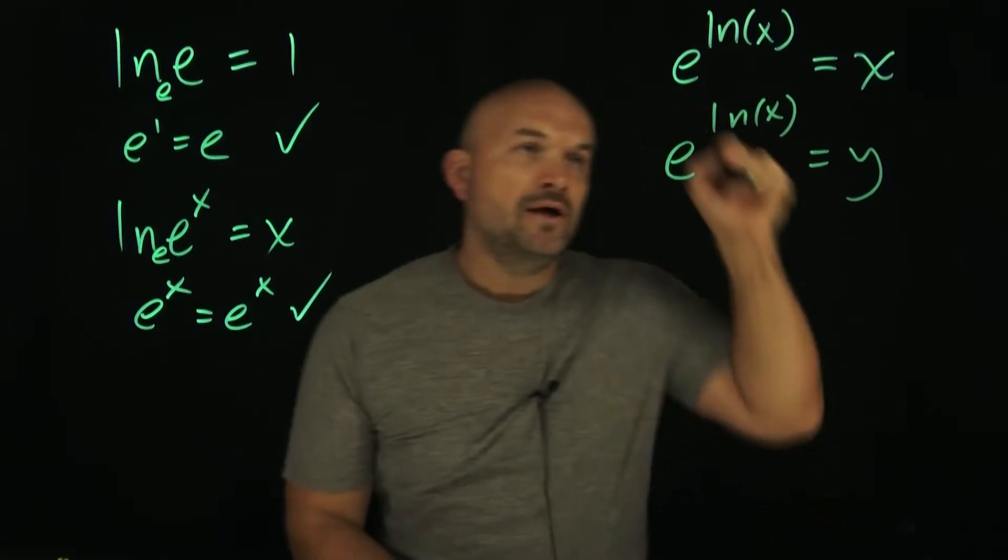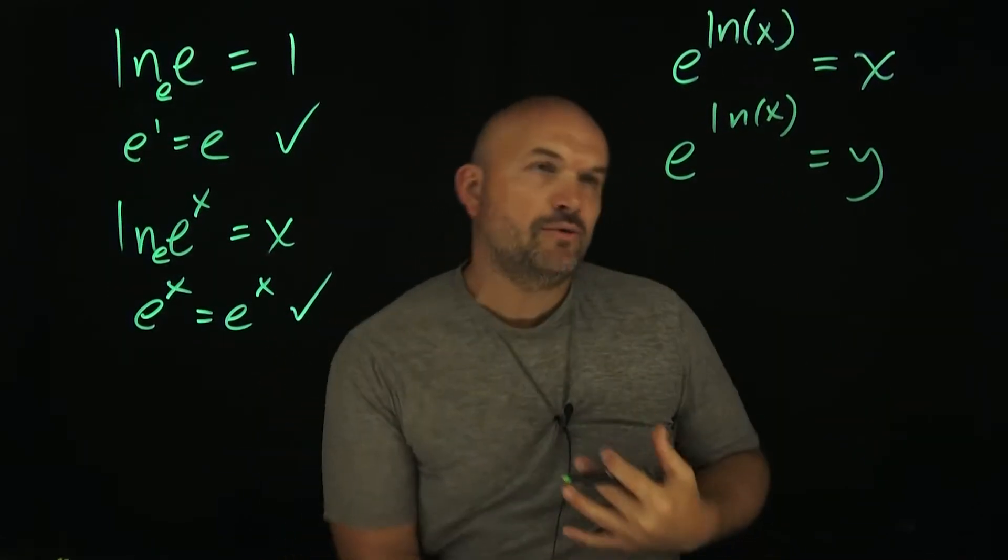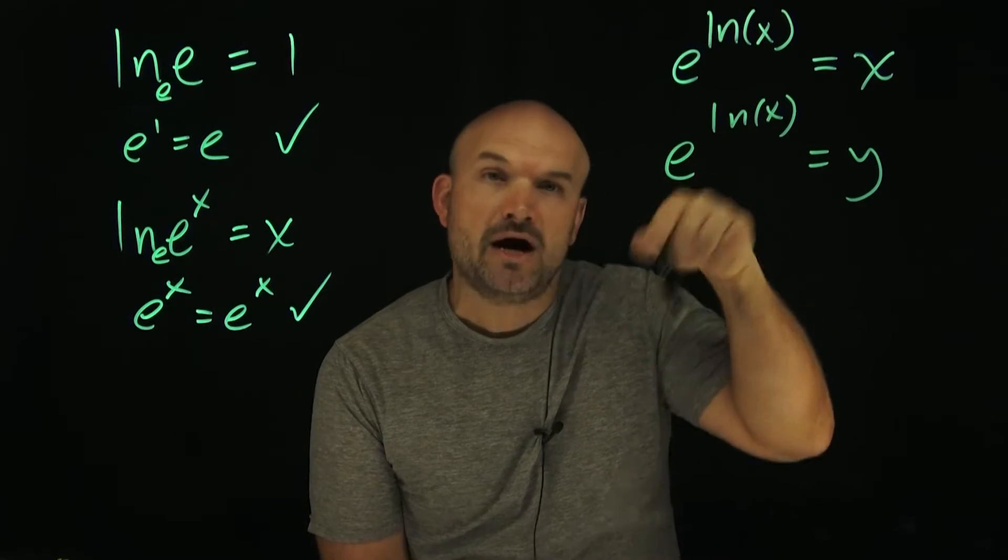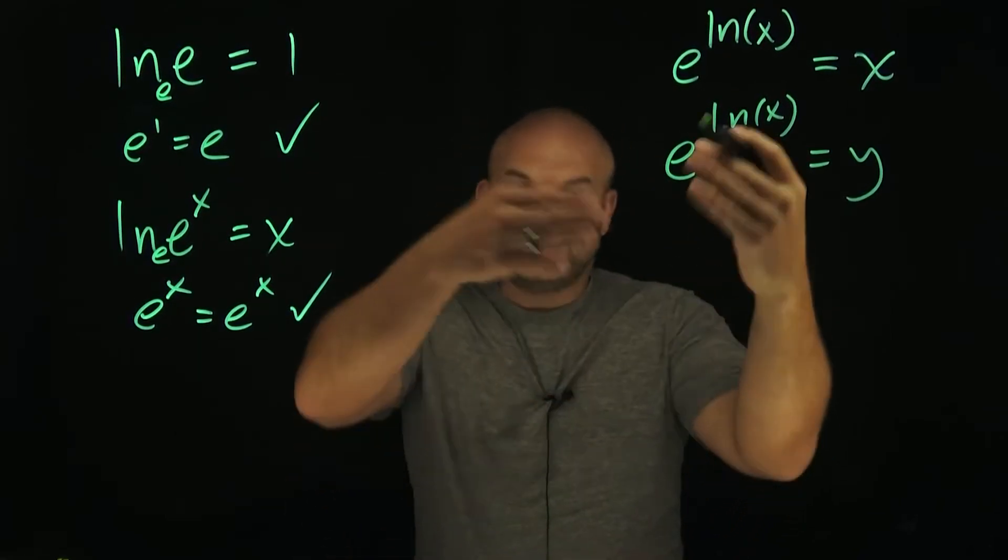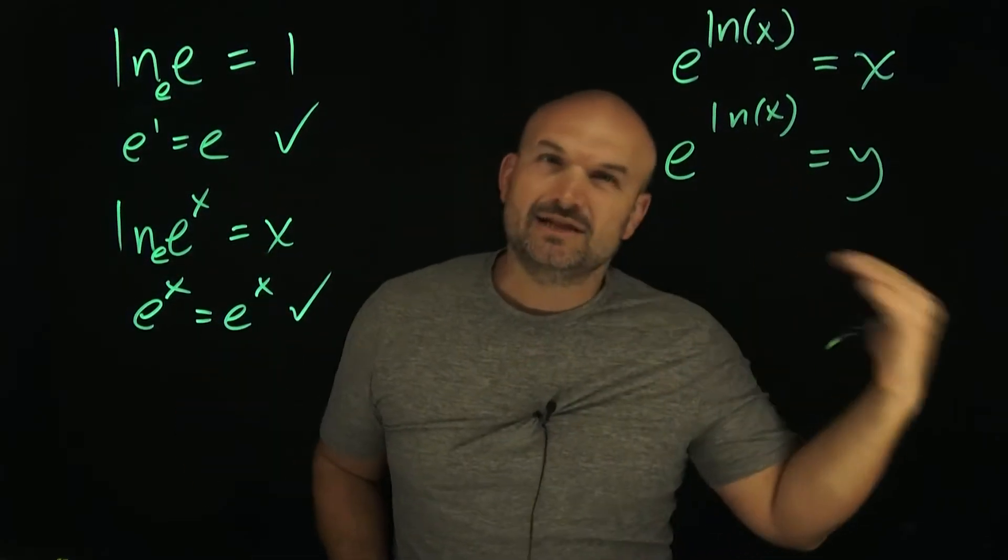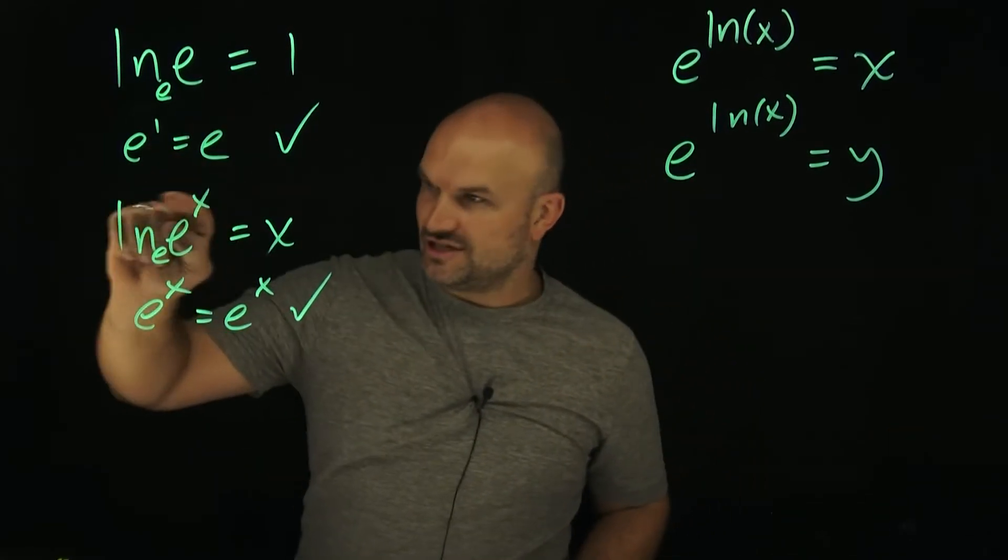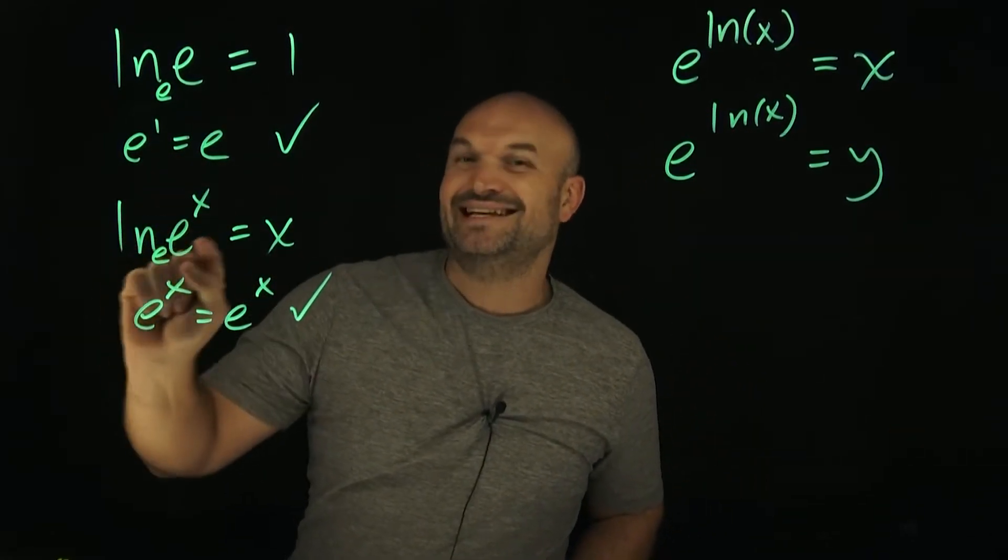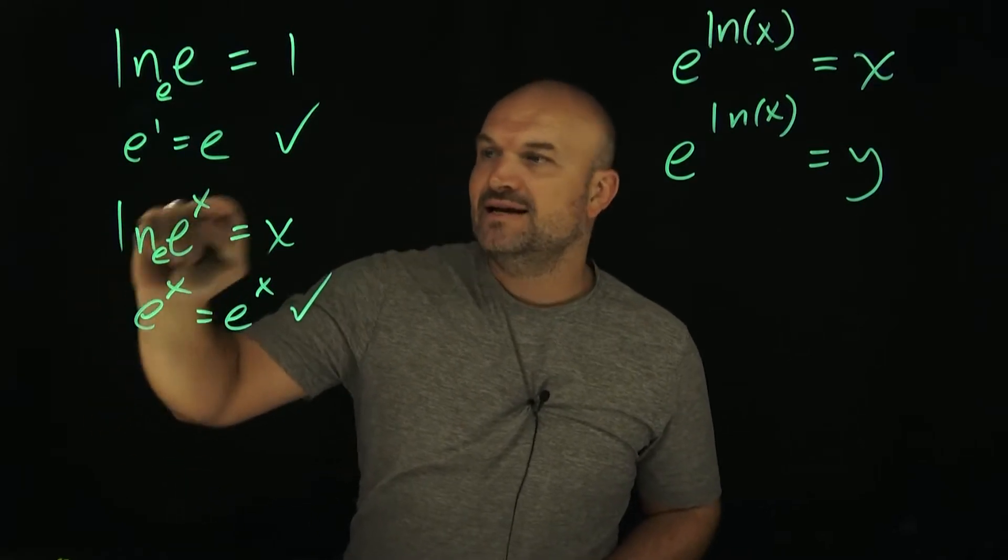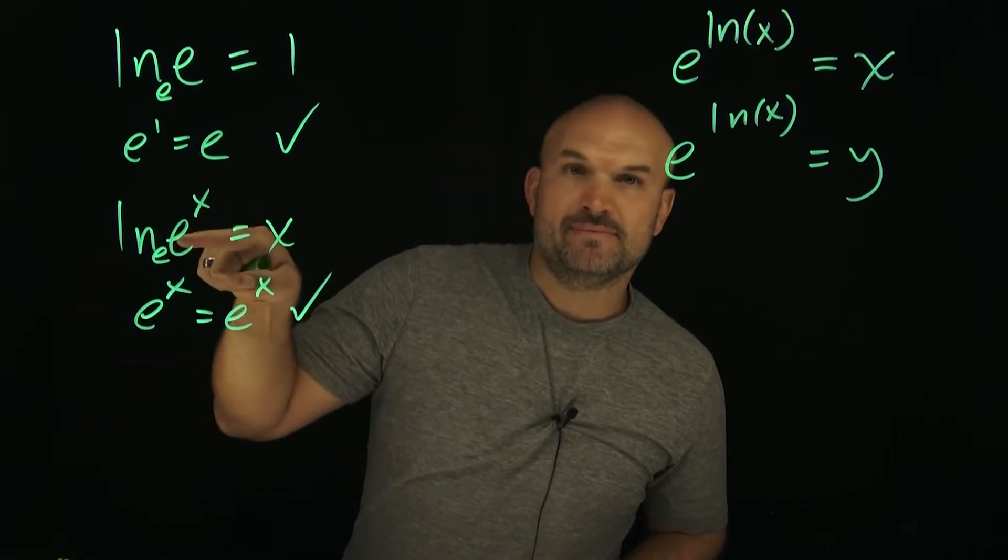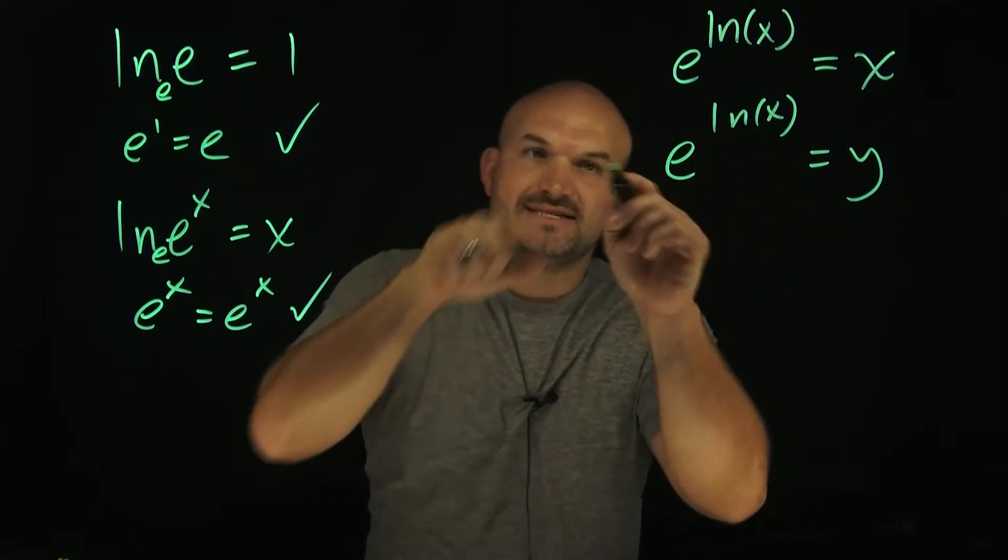Now we know from solving exponential equations that whenever we have a variable in the power, we want to get that off as a power. We're going to take the logarithm of both sides. Since I have a base e, we're going to take the natural logarithm of that base e because that's going to take this ln of x down below.